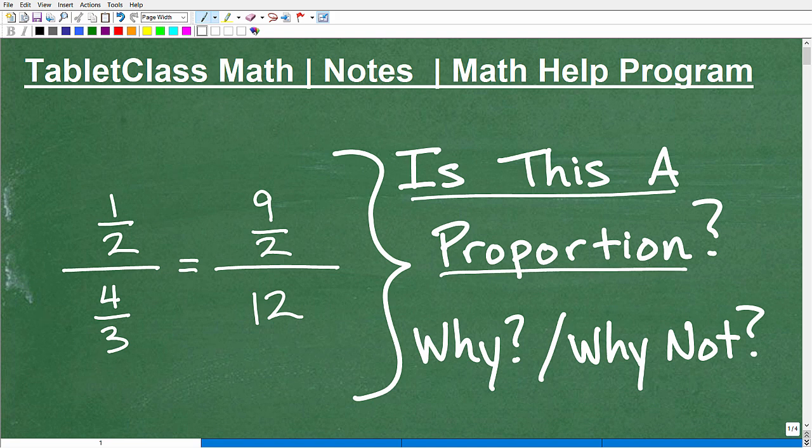We want to give more than a simple yes or no. We'd like to be able to justify our answer with why or why not. So if this is a proportion, why? And if this isn't a proportion, then why not?